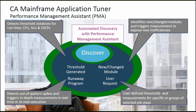Another way to utilize PMA is to establish user-defined thresholds and measurements for specific groups of selected job steps. You may have an online or batch application containing a group of transactions or batch processes that you want PMA to monitor on an ongoing basis for various thresholds. We're also able to use PMA to detect out-of-pattern spikes and triggers within real-time or the next execution within these programs. For runaway programs that are creeping up and causing degradation issues, or programs that may be in a loop, PMA can utilize threshold reporting to identify and help you resolve those.